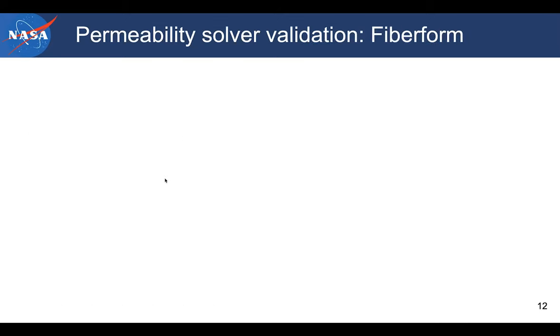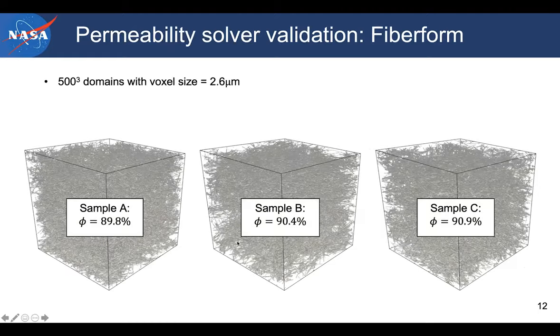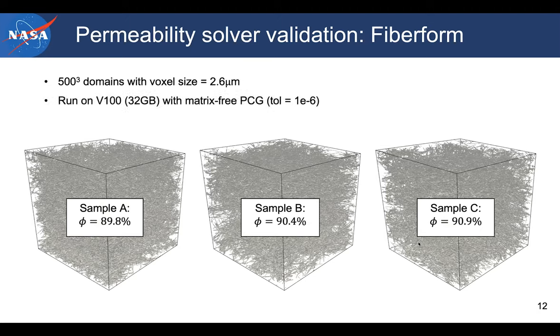So the latest part is about the validation campaign. And this is very much work in progress. The validation campaign was run on a fiber foam. And these are three real micro-CT samples that we have run permeability for. And they are 500 cubed domains with voxel size of 2.6 microns. And as you can see, the porosity varies a little bit. So there might be a little bit of variation in the results due to that.